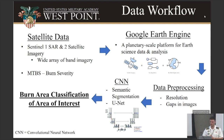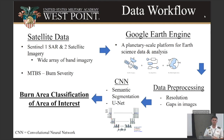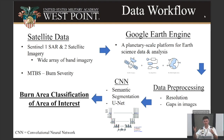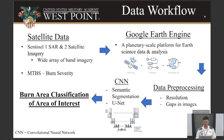So our data workflow involves taking the satellite data I just mentioned, then using Google Earth Engine — a cloud repository of pretty much all the satellite information you could ever want and more. We're able to freely pull that information down and apply the algorithms we'll talk about today to get our result and product.